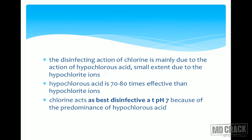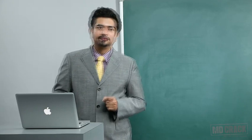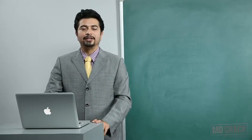Hypochlorous acid is a very good disinfecting medium, and the hydrochloric acid reduces alkalinity and helps it. The disinfecting action of chlorine is mainly due to hypochlorous acid, and only to a very small extent due to hypochlorite ions. Hypochlorous acid is 70 to 80 times more effective than the hypochlorite ion. Chlorine acts best as a disinfectant when pH is about 7 because there is a predominance of hypochlorous acid — that is the active agent in the chlorine reaction.